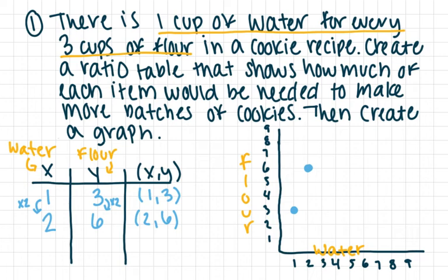And then let's just do one more point. So three. If I have three cups of water, that means I'm multiplying times three. And so three times three is nine. If I have three cups of water, I'm going to have nine cups of flour. So my point is going to be three, nine. I'm going to go over to the right three and then up nine.